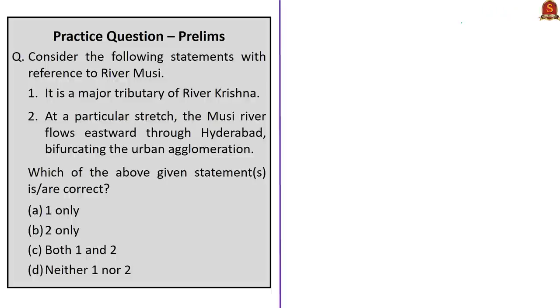According to a study by Osmania University, the polluted water of the Musi River is the main cause of communicable diseases and pediatric problems in the area. Pollution has also directly affected agriculture, stock breeding, and fishing, creating high-risk conditions in food intake and decreasing the purchasing power of inhabitants due to high out-of-pocket health expenditure.